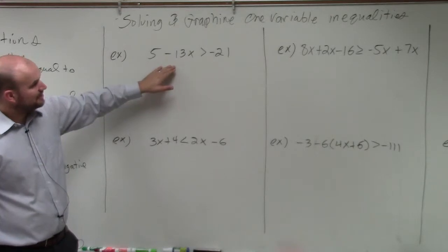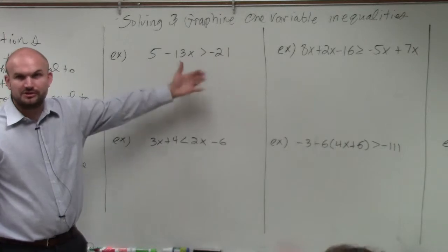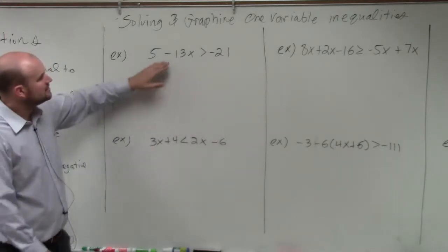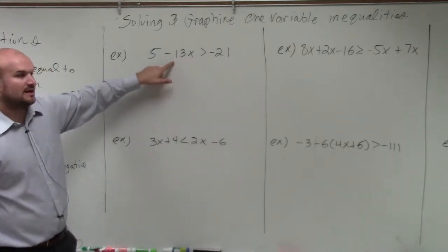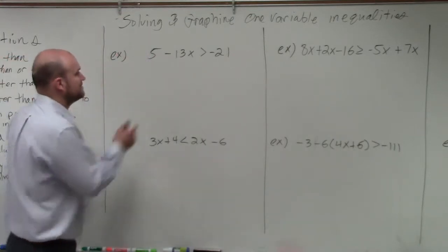In this example, we're just going to pretend the inequality is like an equation and solve it. You see my variable x is being multiplied by negative 13, and it's being added by 5. So we're just going to apply our inverse operations.